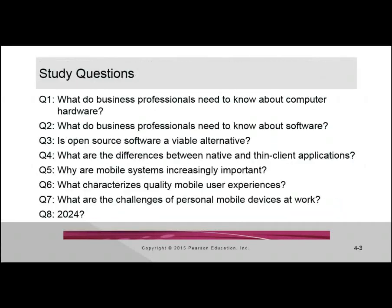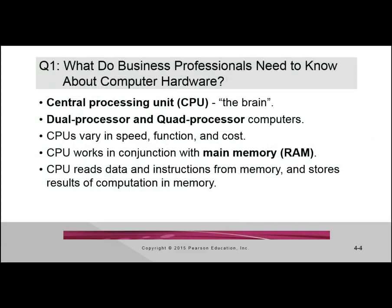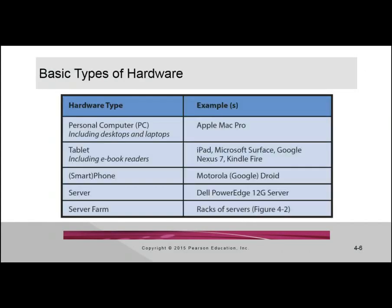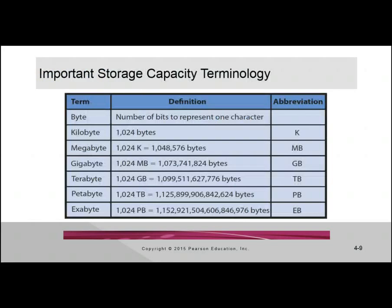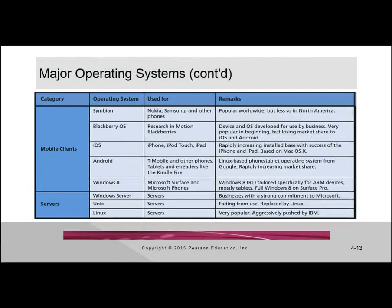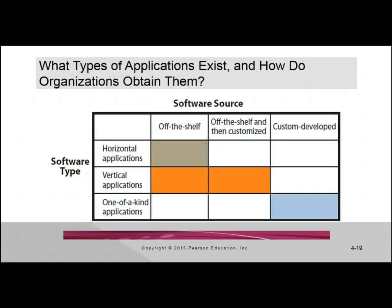In chapter four we're talking about hardware, software, and mobile systems. We've completed hardware and software - the computer side of the five component framework. We talked about storage, ones and zeros, prefixes, bytes, kilobytes, megabytes, gigabytes. We talked about different types of applications: client-server applications, thin client, thick client. We also talked about the types of software - vertical means it covers all aspects of one industry, horizontal means across multiple industries.